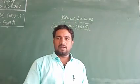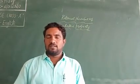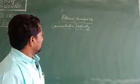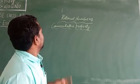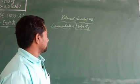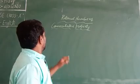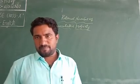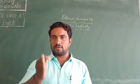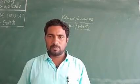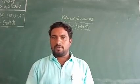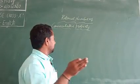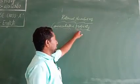Dear children, in the previous class we discussed about the properties of rational numbers, and today I will discuss about one more property. I have already discussed the closure property, and now I will discuss the second property, which is called the commutative property.